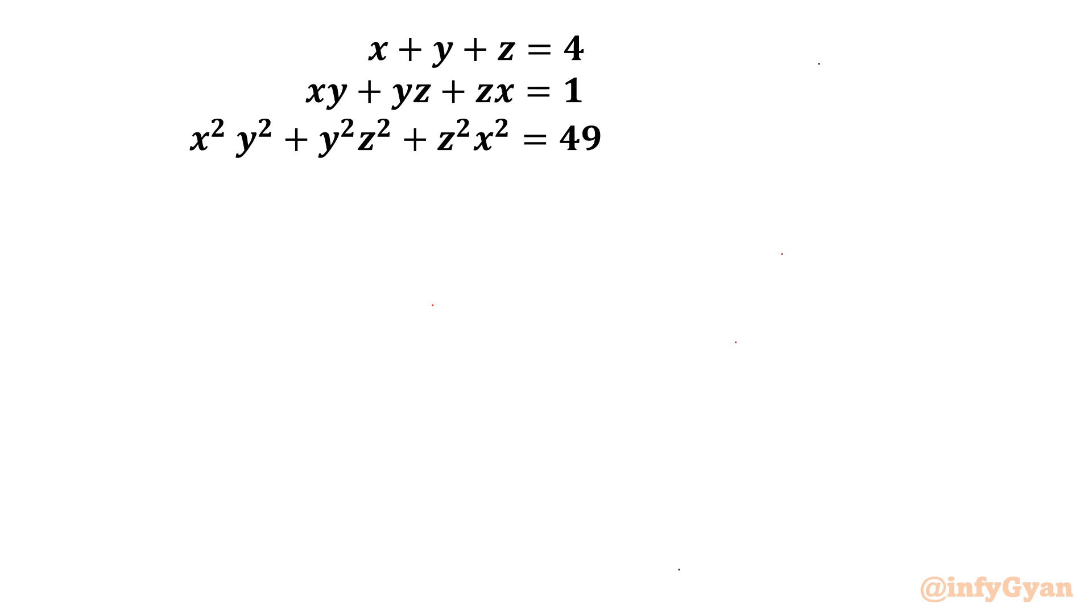Welcome back to Infigyan friends. Today we are going to take up one very interesting system of equations: x plus y plus z equals 4, equation number 1; xy plus yz plus zx equals 1, equation number 2; and x squared y squared plus y squared z squared plus z squared x squared equals 49, equation number 3.